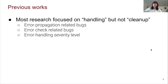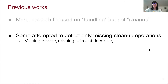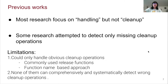Previous work mostly focused on the error handling parts, but not the cleanup operations. For example, some work addresses error propagation related bugs, and some tries to detect error handling severity level related bugs. Only a small part attempts to detect missing cleanup operations, like missing release or missing ref count decrease operations. However, none of them can comprehensively or systematically detect wrong cleanup operations. Most could only handle commonly used cleanup operations like commonly used release functions or ref count decrease functions, and most are based on function-name-based detection methods, which means the precision rate and recall of such work will not be very good.